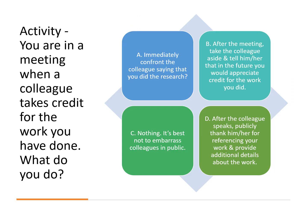Here's a reflective activity: you're in a meeting when a colleague takes credit for the work you've done. What do you do? A) immediately confront the colleague; B) after the meeting, take the colleague aside and ask for credit in future; C) nothing, to avoid embarrassing colleagues in public; or D) after the colleague speaks, thank them for referencing your work and provide additional details. The key point is the need to be assertive, not passive-aggressive, and to be empathic — but not to engage in learned helplessness. We don't want to go for option C.